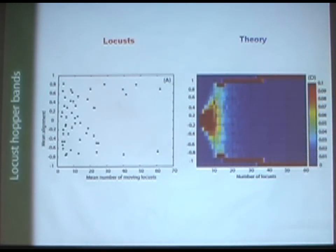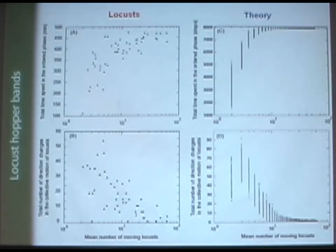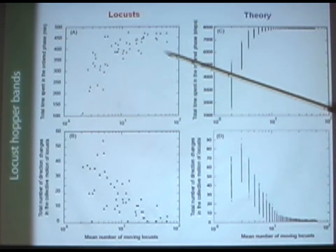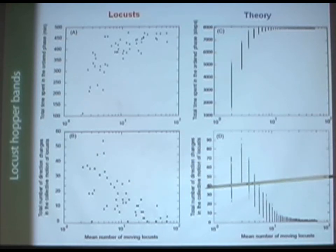Each point, really, is a day of work for the computer, more or less. We can also look at the total time spent in the orbit phase in our real experiments and as predicted by the Vicsek model. And also, the total number of direction changes.